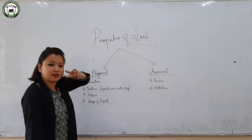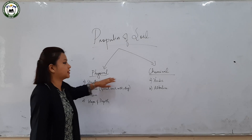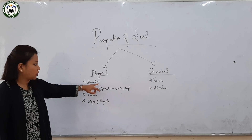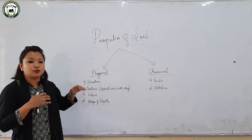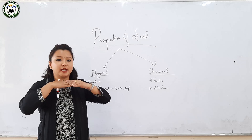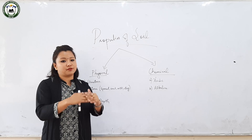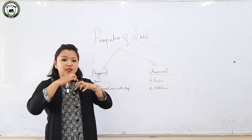Now coming to the properties of soil: there are two basic properties — physical and chemical. In addition, biological properties can also be added, but here I will highlight only the physical and chemical properties. The physical properties consist of soil structure, soil texture, soil color, and soil slope and depth. Soil structure means the arrangement of soil particles. If the soil particles are arranged tightly, there is cementation — no movement of materials, water, or air — making such soil very infertile.